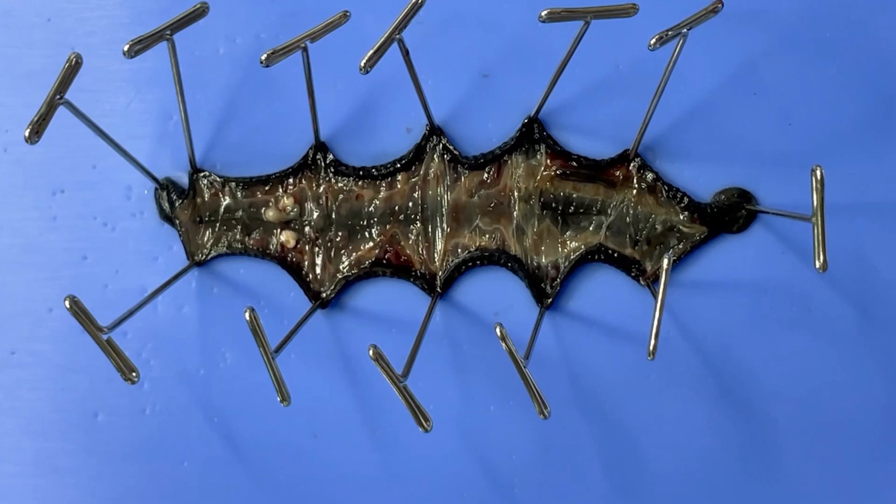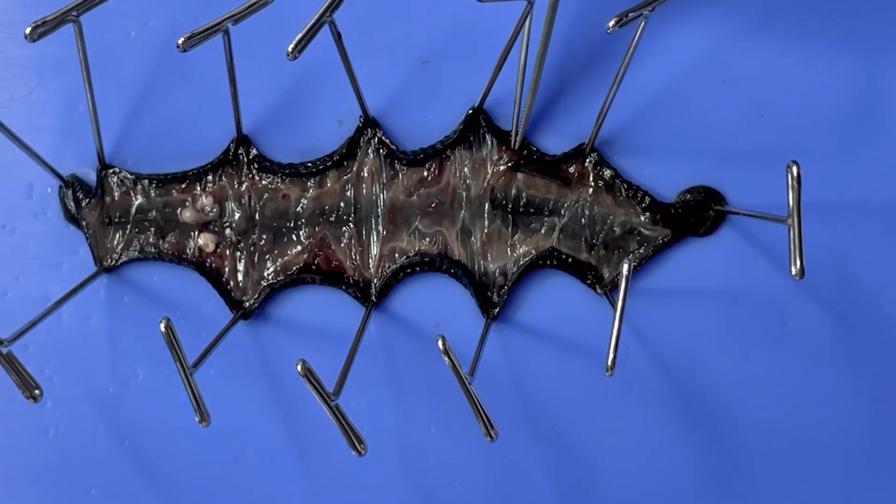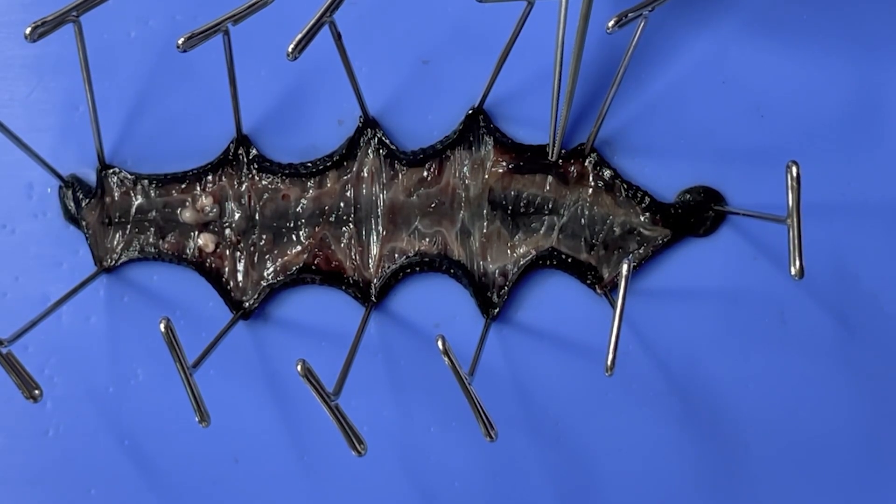This leech has been fasting for a long time, and there is almost nothing inside the digestive tract. However, you can see that there is still a little blood left here in the posterior ceca.